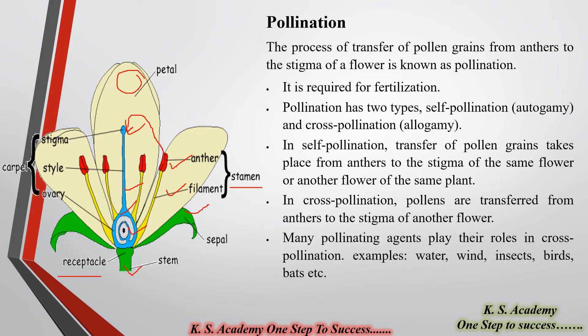Many agents play their roles in cross-pollination, for example water, wind, insects, birds, and bats. The pollen grains are attracted to or attach to birds and insects, and through them the pollen grains are transferred to the flower of the next plant. This type of pollination is called cross-pollination.